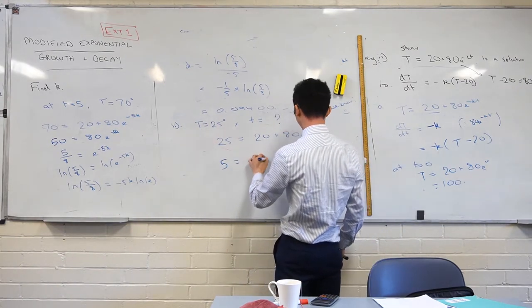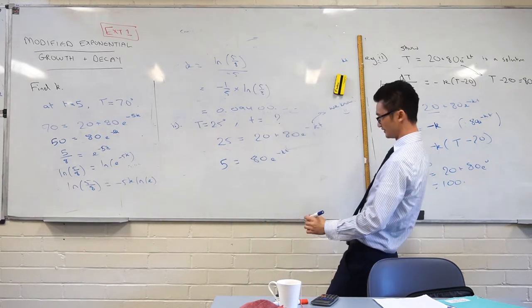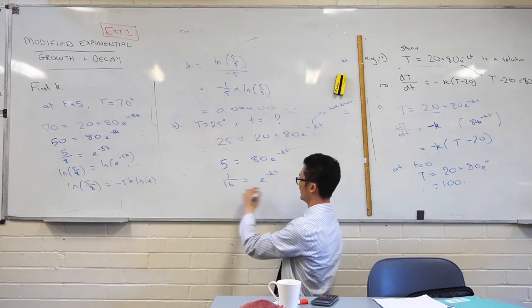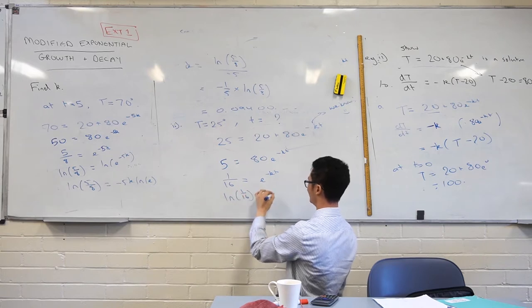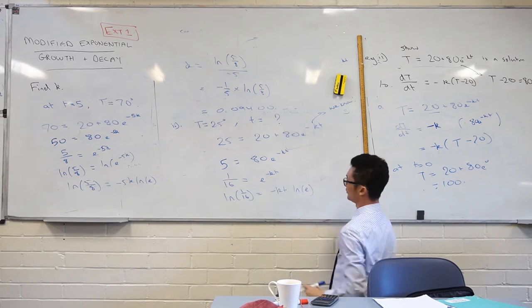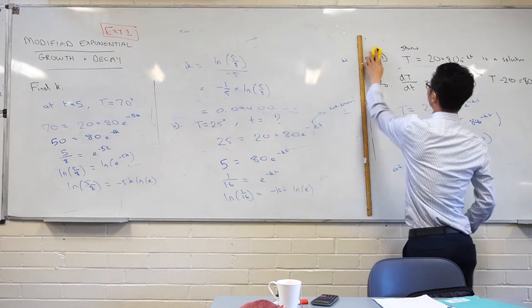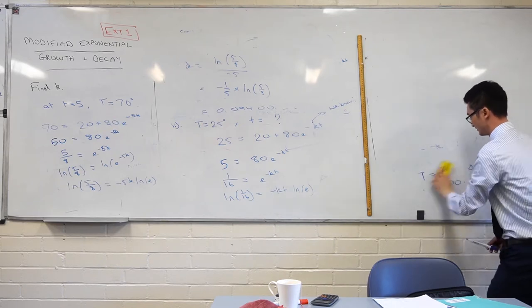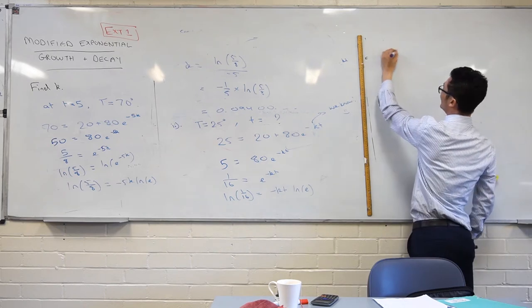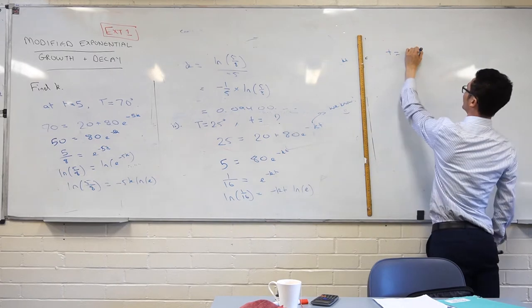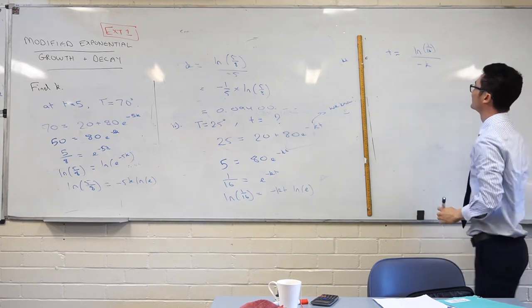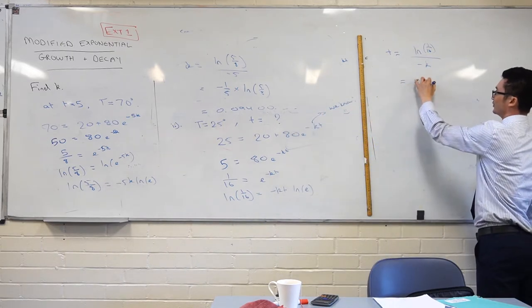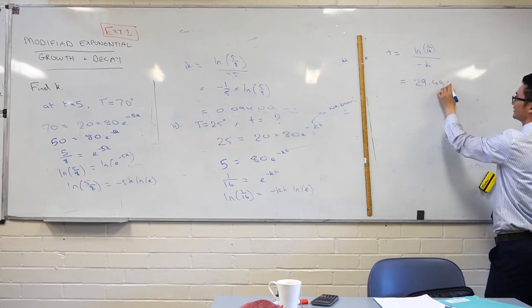So, we've got 5 is equal to 80e to the negative kt, or 1 on 16, divide both sides by 80. And then let's take the log of both sides again, just like before. ln of e, which we know that's just 1. Let's get rid of this guy. And so, our t value, or how long it takes, is just going to be equal to ln of 1 on 16, all divided by negative k. Let's work that out. 29.495. 24.49. 29.4, sorry. 24.49.